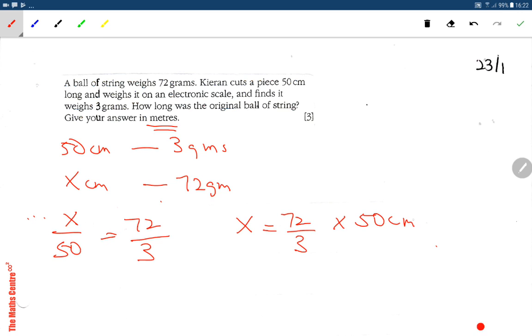Times 50 cm—the grams and grams units cancel each other. So what do you have? 3 goes into 72, that's 24, and 24 times 50 is 120.